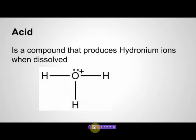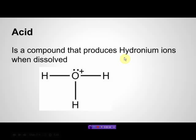First, we need to identify what an acid is. An acid is a compound that produces hydronium ions when dissolved in water. The hydronium ion looks like a water molecule except it has an extra hydrogen attached to it, and it has a positive charge.